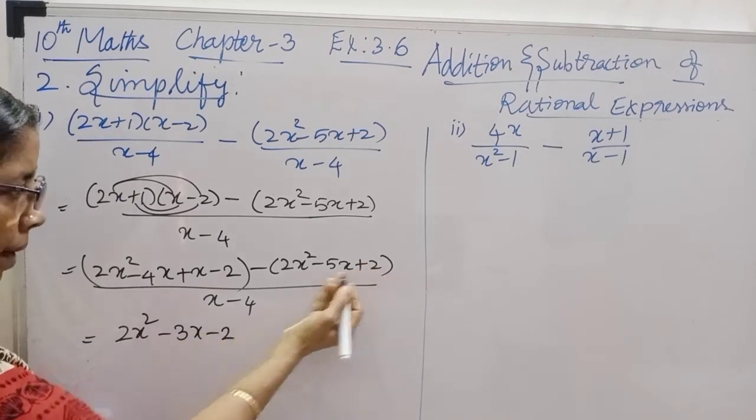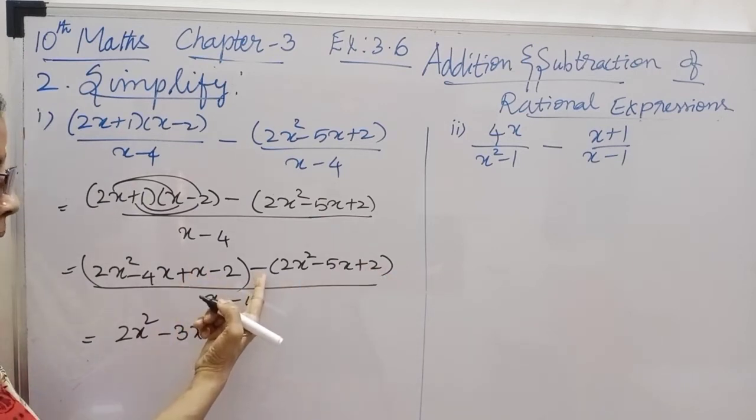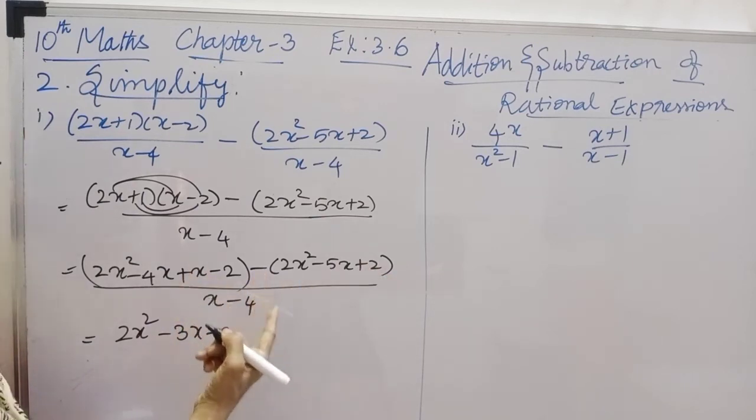Minus 2. So we will have 2x squared minus 4x plus x plus 2 minus 2, then multiply with the negative sign.